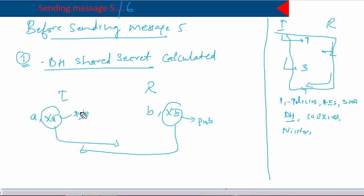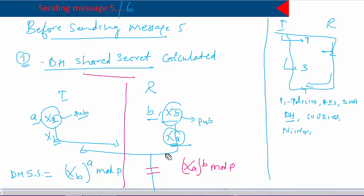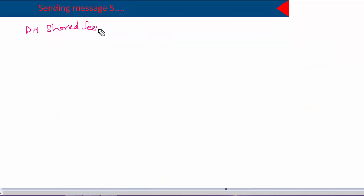Once these four messages have been exchanged, both sides have each other's public key. The initiator has its own private key, its own public key, and the responder's public key. Similarly the responder has its own private and public key and the initiator's public key. Both sides then generate their Diffie-Hellman shared secret. On the initiator side it is XB^A mod P, and on the responder side it is XA^B mod P — and these two values turn out to be the same.